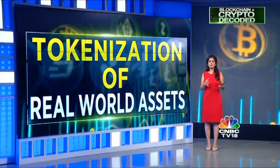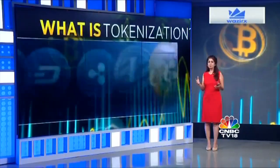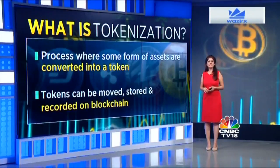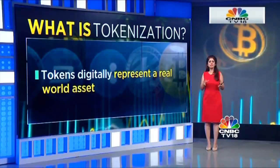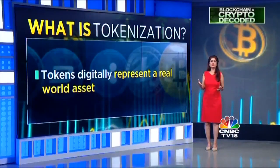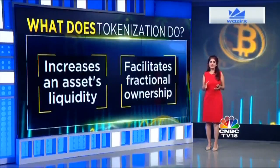Tokenization is a process where some form of assets are converted into a token that can be moved, stored, or recorded on a blockchain. The process of tokenization simply means to digitally represent an asset in the form of a token. To put real-world assets like land or a house on the blockchain, the first step is to tokenize them.